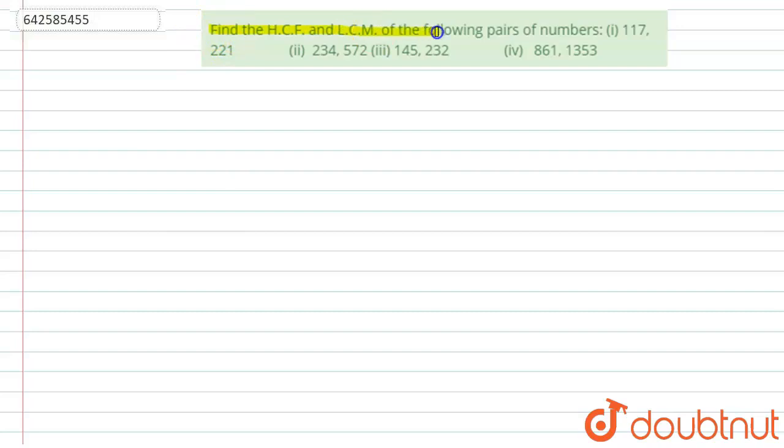the HCF and LCM of the following pairs of numbers. So let's start. The first pair is 117 and 221. So they have 13 as the common prime factor, and we get 9 and 17 here.